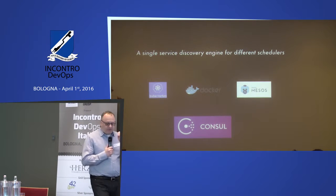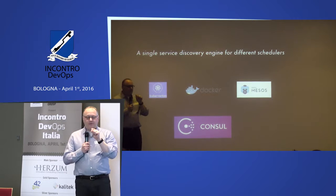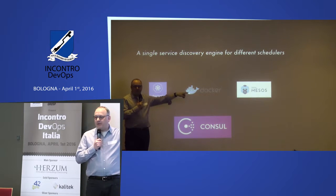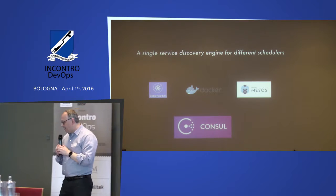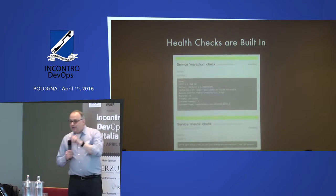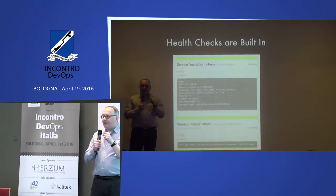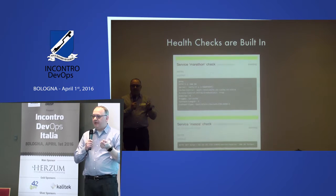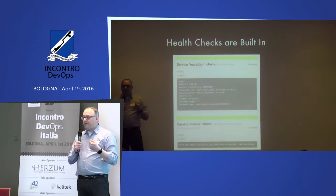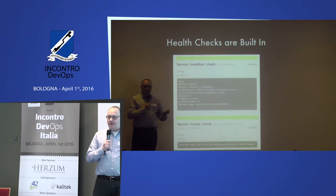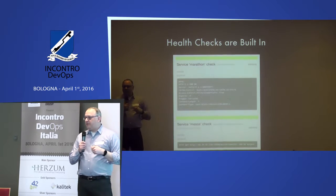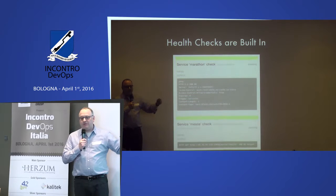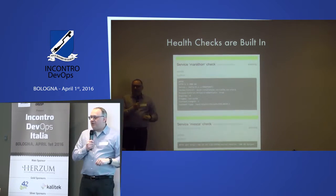Another cool thing about Consul is built-in health checks. Instead of monitoring infrastructure with something like Nagios or Sensu from the outside, Consul embeds health checks — if something fails a health check, it's pulled out of service discovery. Every service deployed on Mantle's OS layer has a health check, so the cluster actually knows the state of everything running on it. You just drop the JSON into the Consul directory and reload — for example, checking that Marathon is running, and if not, removing it from DNS.